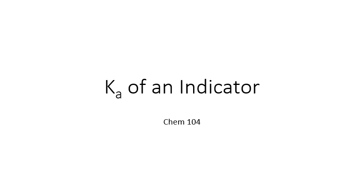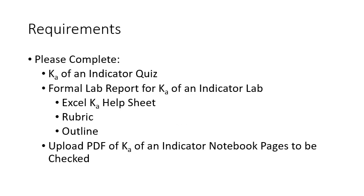In this lab you are going to be identifying an unknown indicator by determining its Ka or pKa. In order to complete this lab you do need to take the Ka of an indicator quiz. This is a formal lab write-up and there are some helpful resources for you. There is an Excel Ka help sheet. This does not need to be turned in but this is for you to double check to make sure that the calculations that you're doing are correct. There is a rubric that is available for you in Canvas and also an outline to help guide you in the writing of your formal lab report. Once you've completed the lab report you also want to upload a PDF of your lab notebook that can be graded.